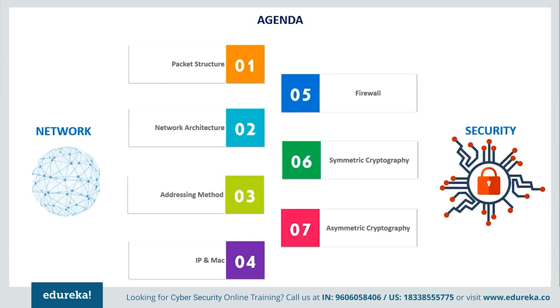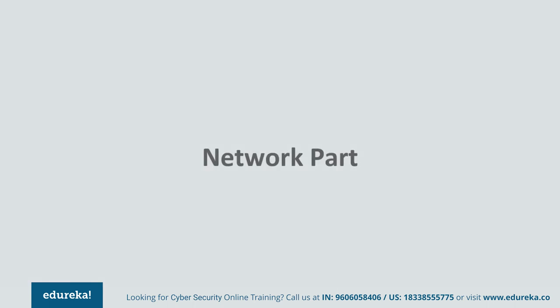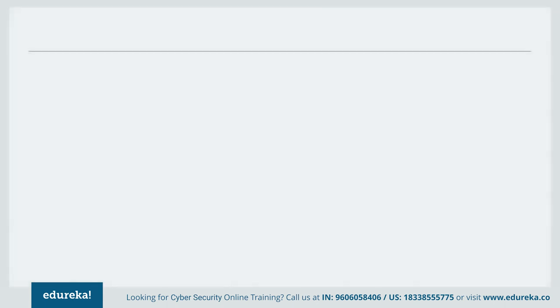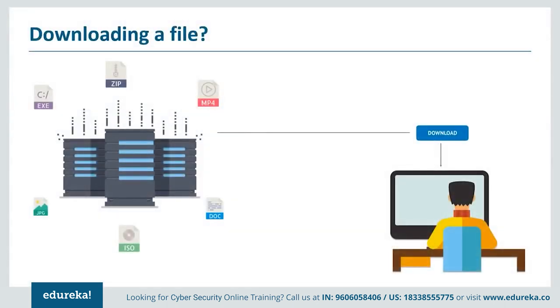Let's begin with the network part and learn how a network actually works. I think it's right to assume all of you watching this have downloaded some sort of file in the past, whether it be a movie, a TV show, some software, or music. You have downloaded something off the internet, but most of you don't really know how the whole process works. When you click that download button, your whole file doesn't really get sent to you all at once. Rather, it is broken down into tiny units called packets, which are then transmitted over a network to your computer.